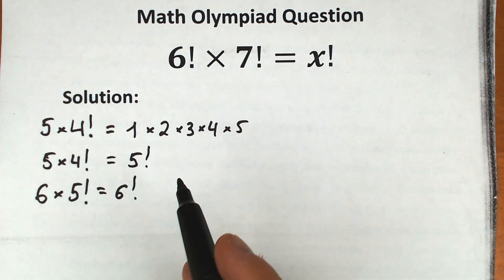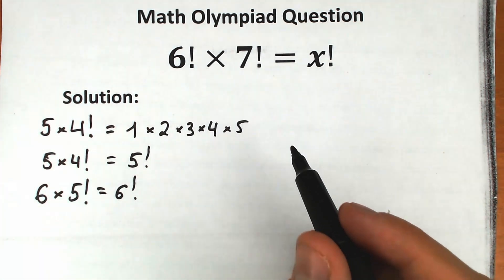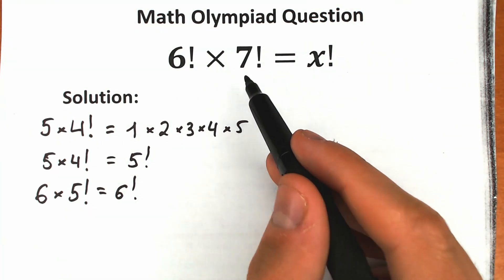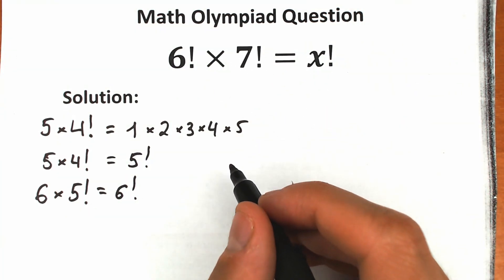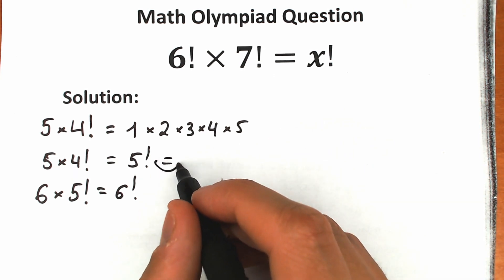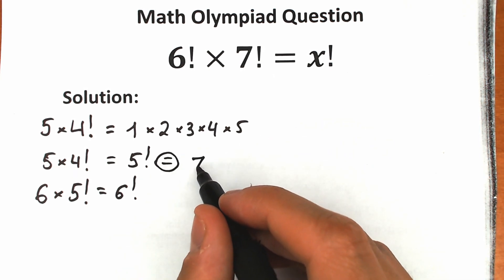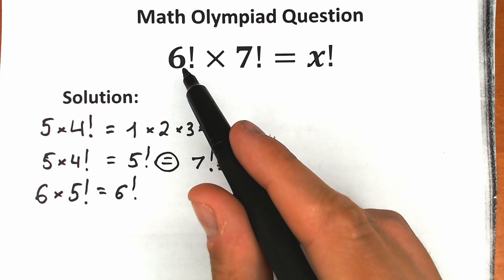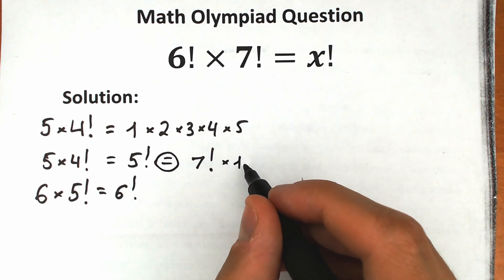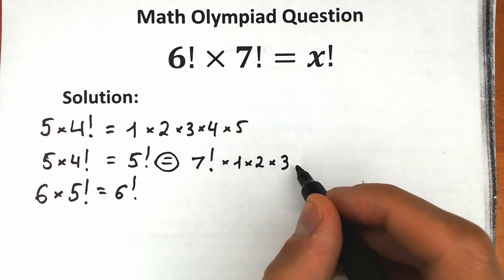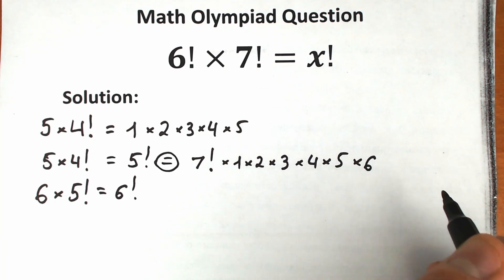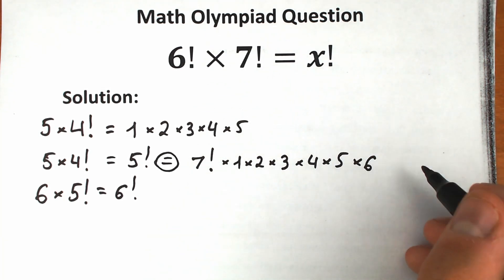Now let's use this algorithm in our solution. First, let's write 7 factorial as it is, and write 6 factorial as its full product: 1 times 2 times 3 times 4 times 5 times 6, all equal to x factorial.